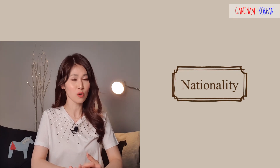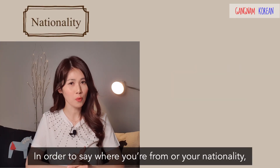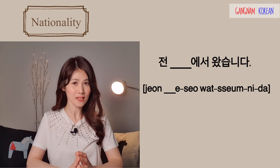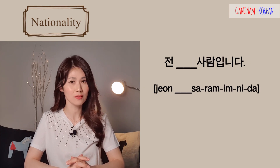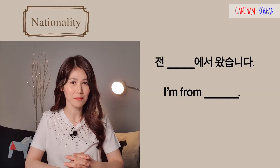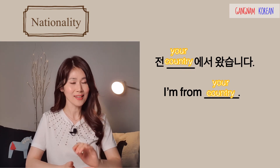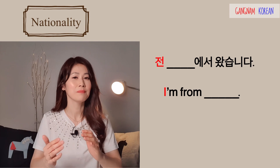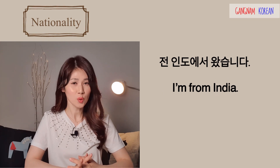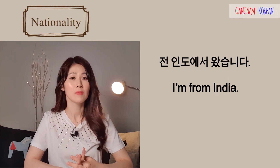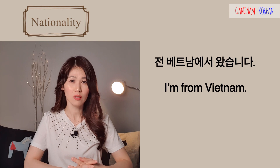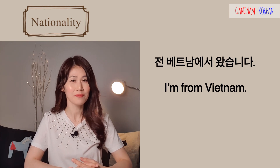Now let's move on to telling your nationality or where you're from. You could use two different patterns. First: 전 ~~에서 왔습니다. 전 means 'I', 에서 means 'from', 왔습니다 means 'came'. 전 인도에서 왔습니다 — I'm from India. 전 미국에서 왔습니다 — I'm from the US. 전 베트남에서 왔습니다 — I'm from Vietnam.